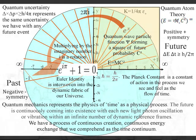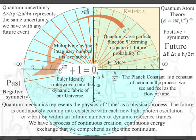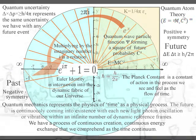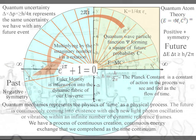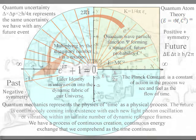The second postulate is that Heisenberg's uncertainty principle is formed by the wave function. This is the same uncertainty that we have with any future event.